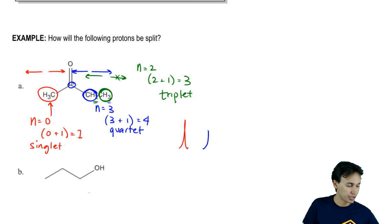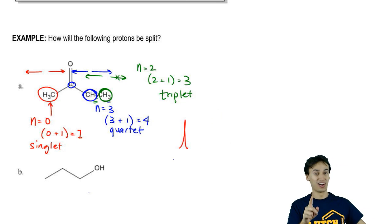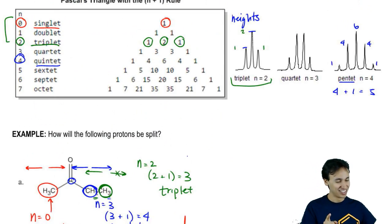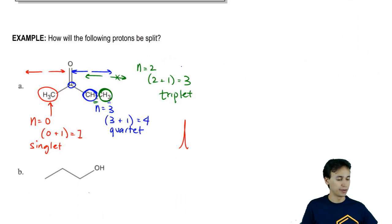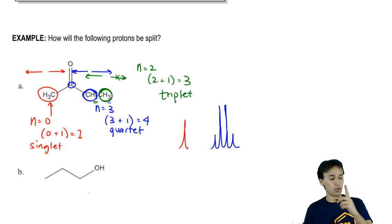A quartet would look like this with 1, 2, 2, 1 – actually, no, that's not what it says. That's wrong. Let's look at Pascal's triangle. Pascal's triangle actually says for a quartet that should be 1, 3, 3, 1. So I drew that all wrong. Let's do it again. So it should be 1, 3, 3, 1. And then my triplet, as we said earlier, is 1, 2, 1. So then the triplet should look like this.